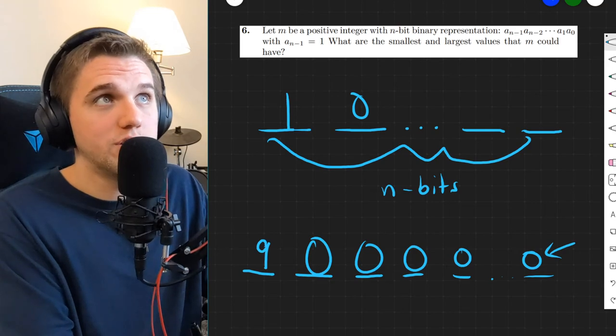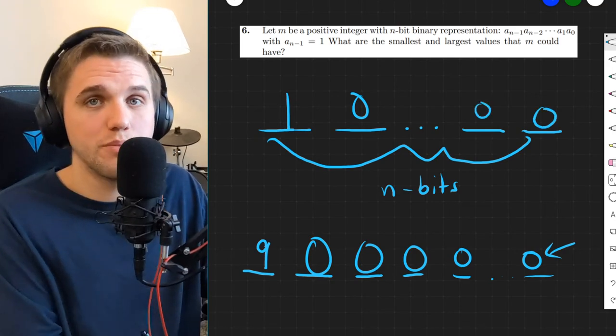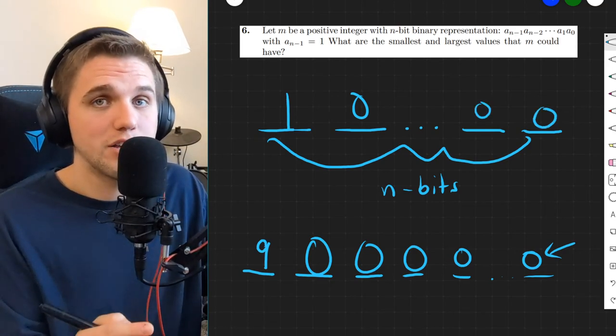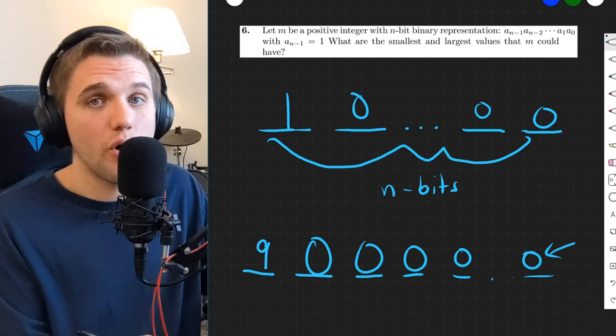And in the same way, we would put 0s in all of these placeholders if we were to build the smallest possible binary number with n bits where the leftmost digit is a 1.